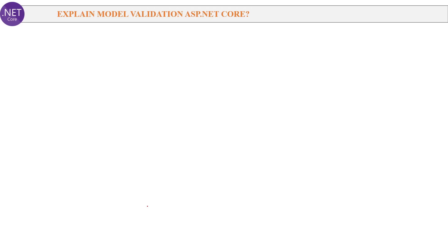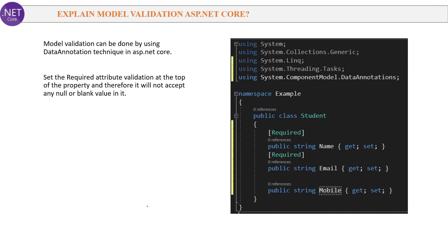Next question: Explain model validation in ASP.NET Core. Model validation can be done using the data annotation technique. Using the namespace System.ComponentModel.DataAnnotations, you can set the Required attribute on top of a property. For example, setting Required on the Name property means it will not accept any null or blank value. In the example, the Mobile property does not have the Required attribute, meaning it can accept a blank value. That is how model validation works with data annotations.